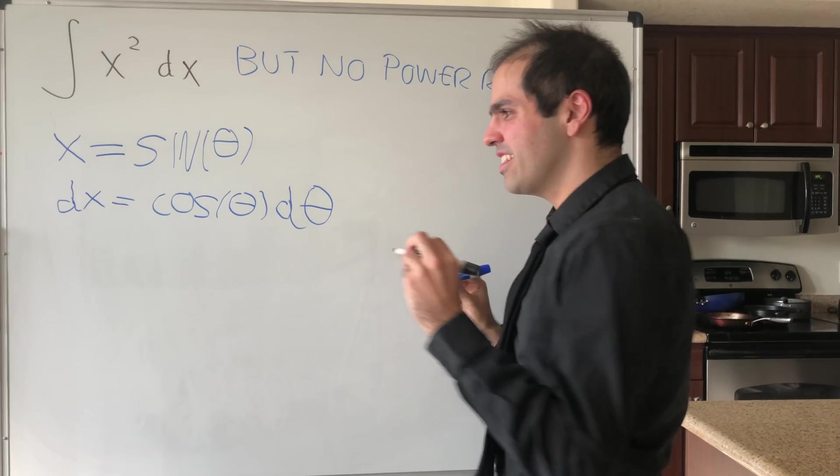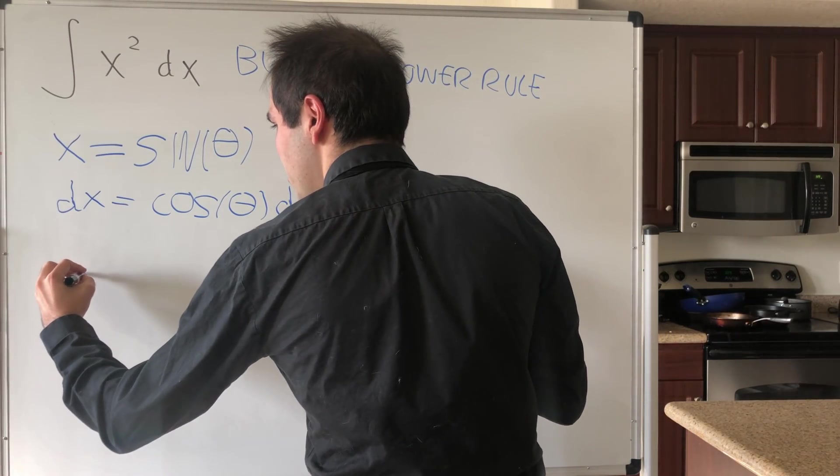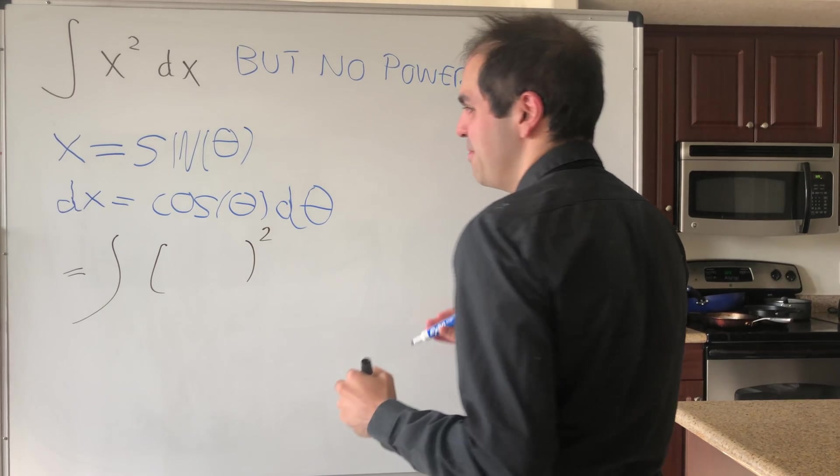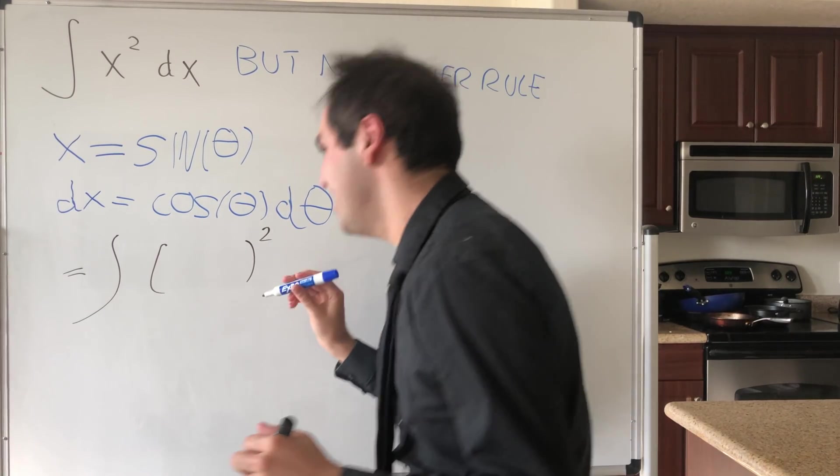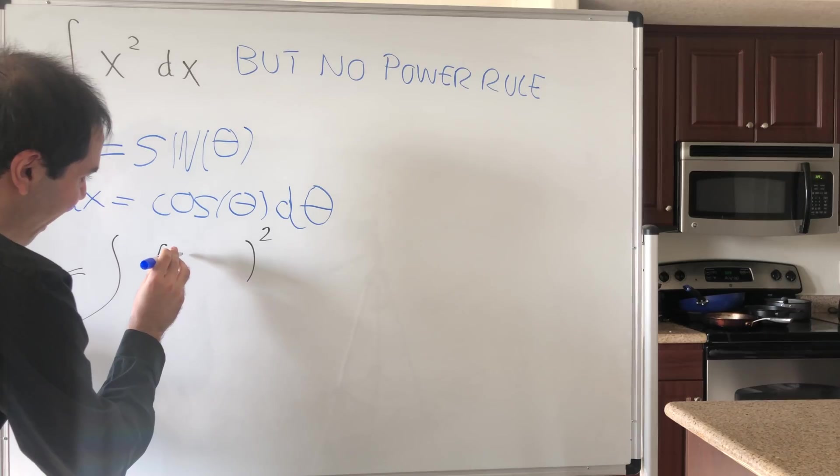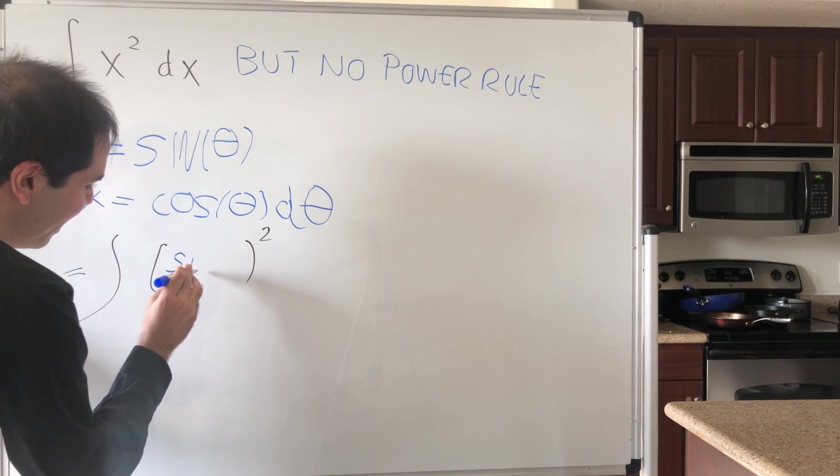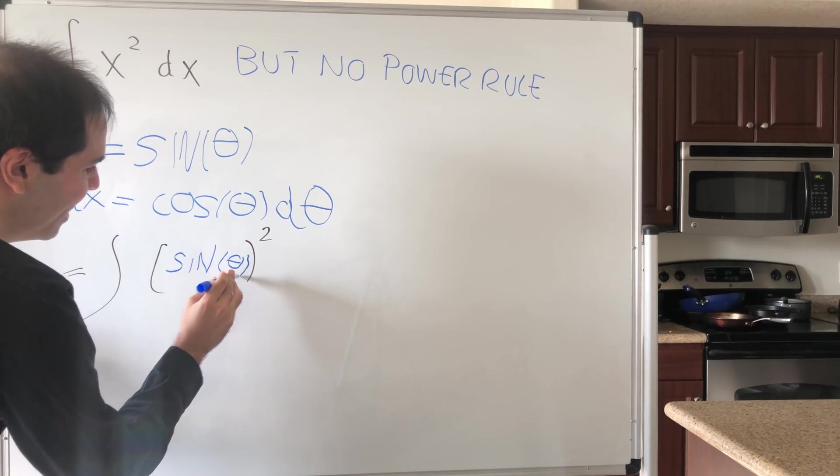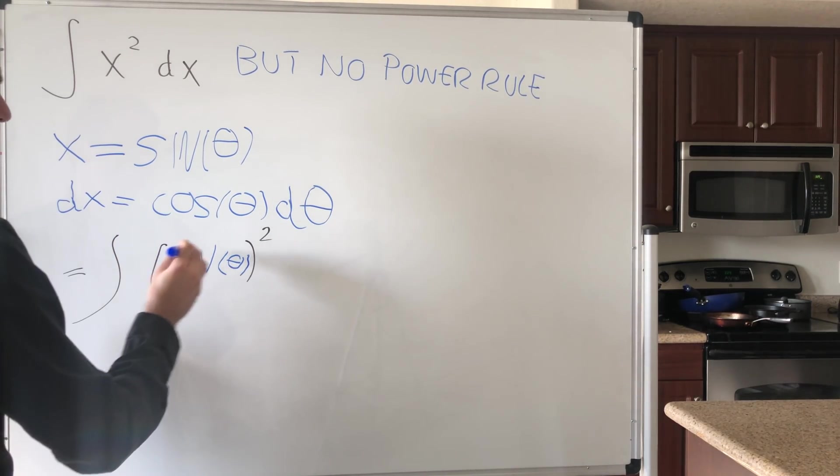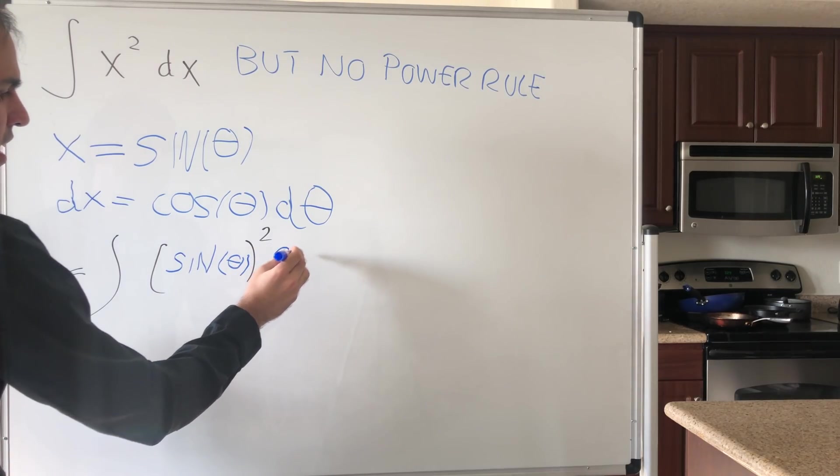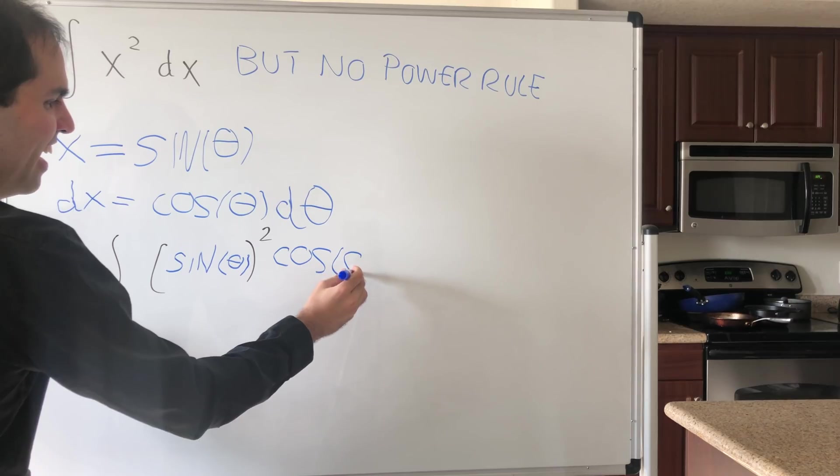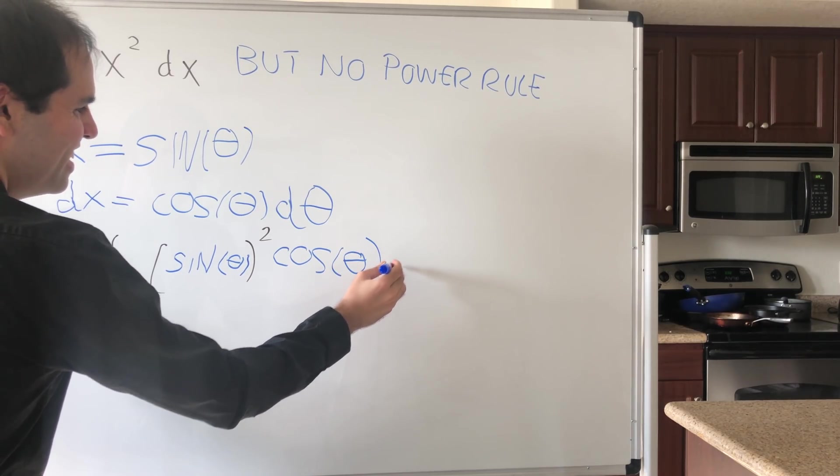And then what happens to this integral? Then we just get that this becomes the integral of something squared times something. So it becomes sine of theta. Why are you torturing me like that? Sine squared of theta, cosine of theta d theta.